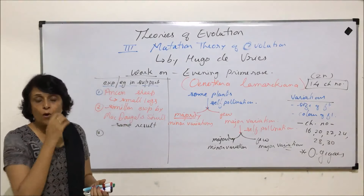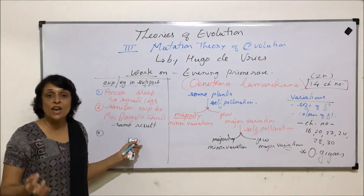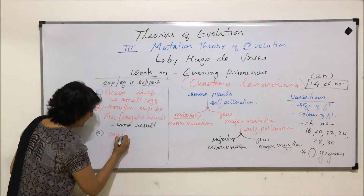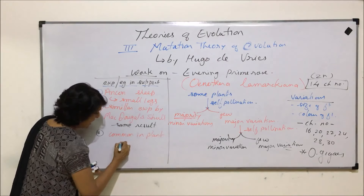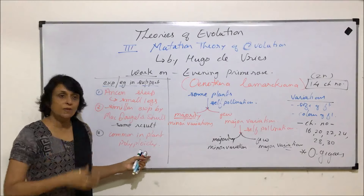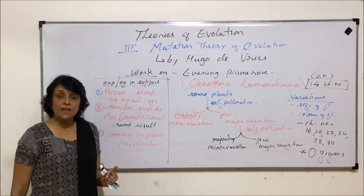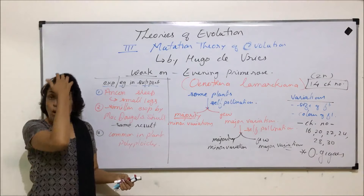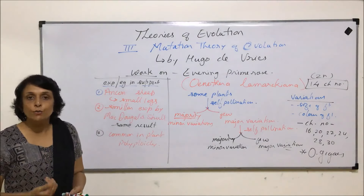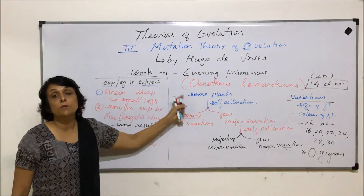Another example is mutations in plants, particularly polyploidy, where sudden changes are seen in the next generation. Plants of one generation are normal, and suddenly some distinct variations appear in the next. Some of these variations are useful, some are not — depending on their utility, we can continue with them. These examples support the mutation theory.